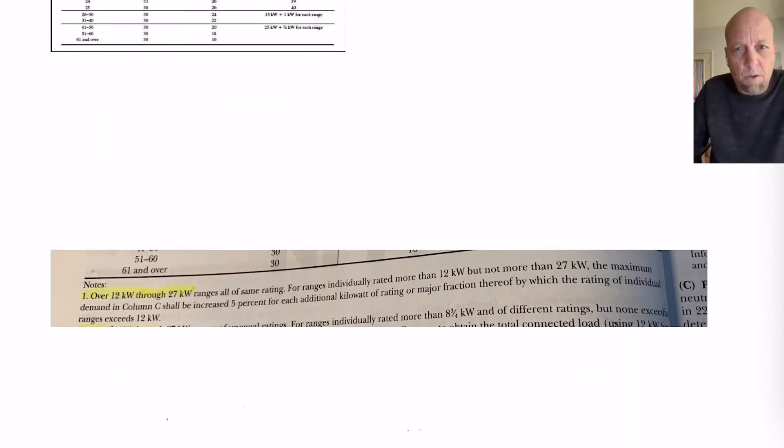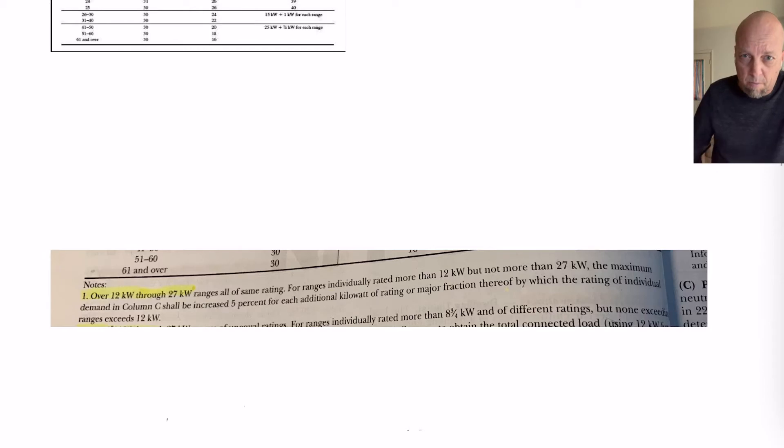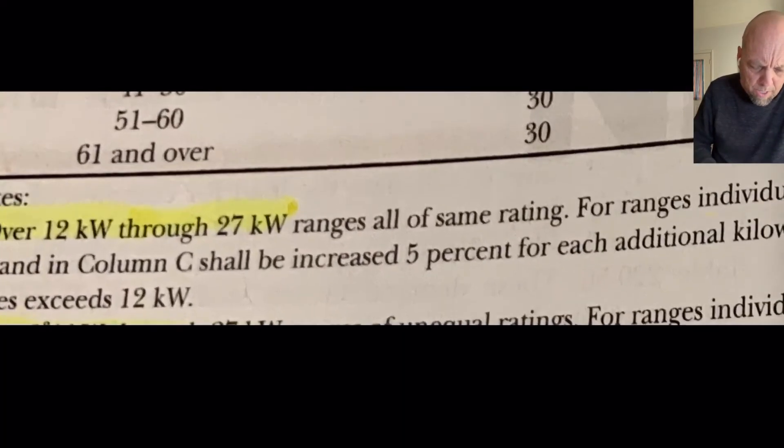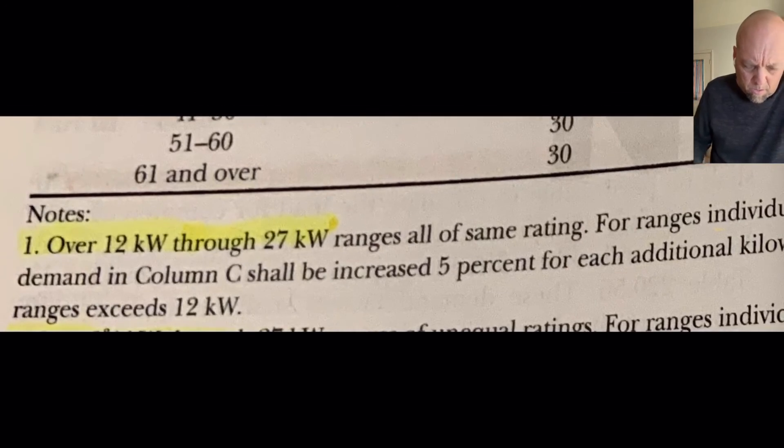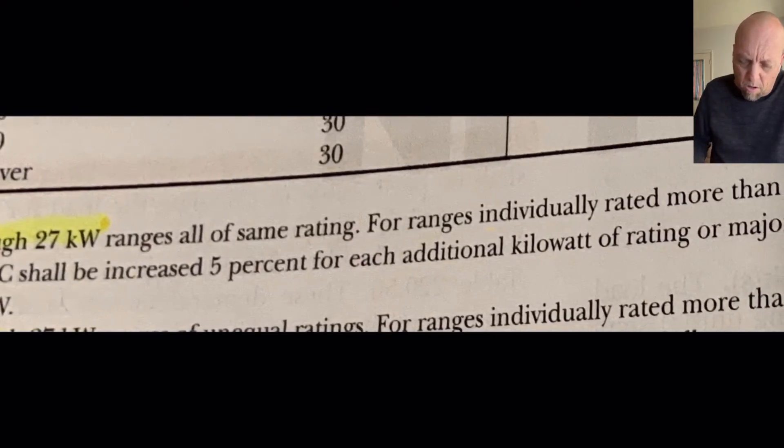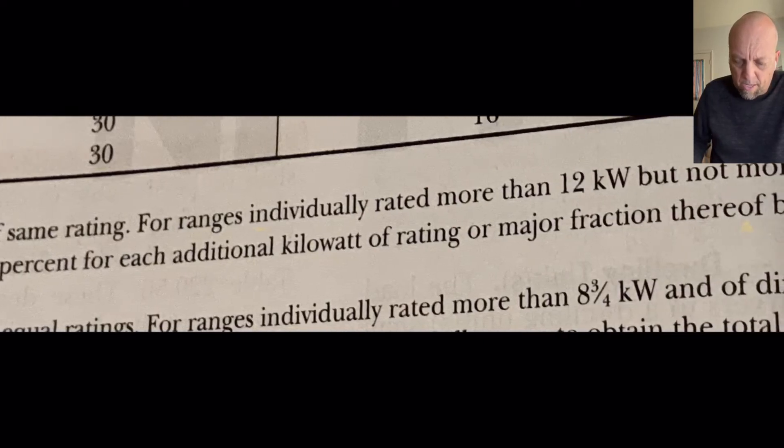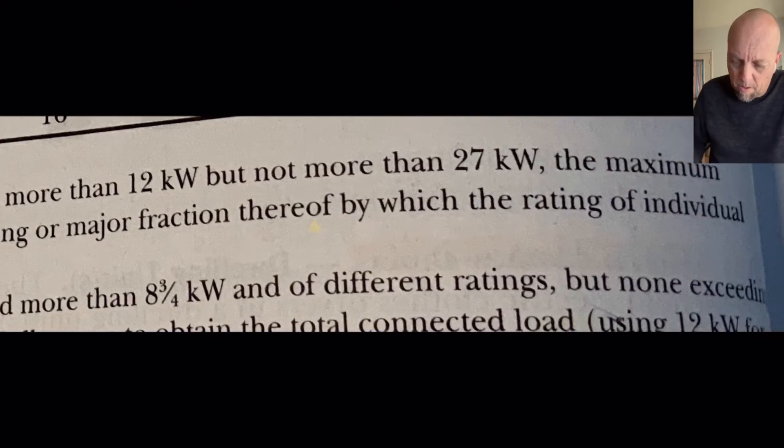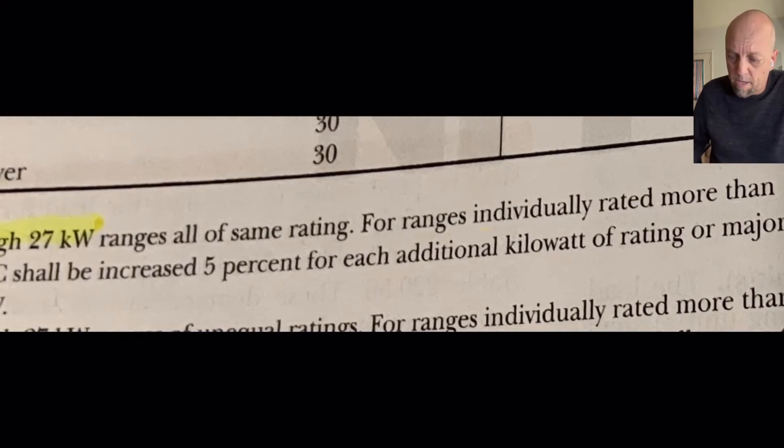Also, we need to go to note one below the table. And let's take a look at that. So, note one reads over 12kW through 27kW ranges, all of the same rating. For ranges individually rated more than 12kW, but no more than 27kW,